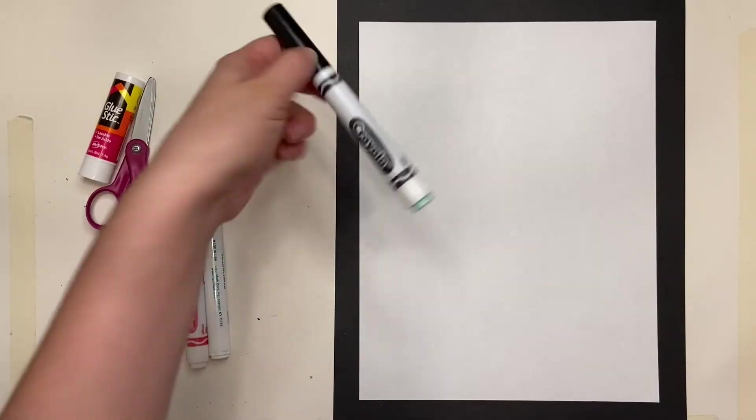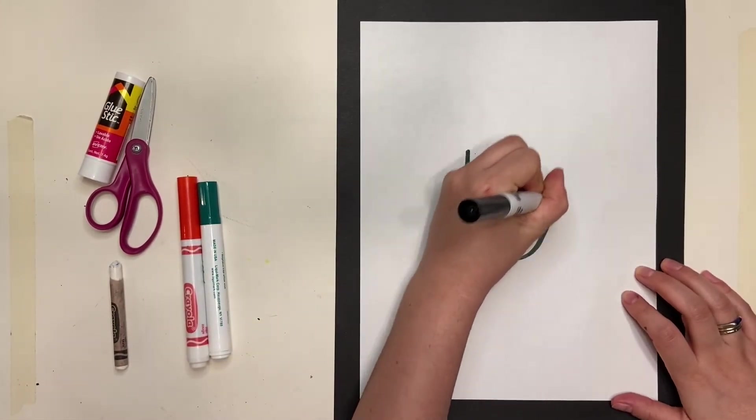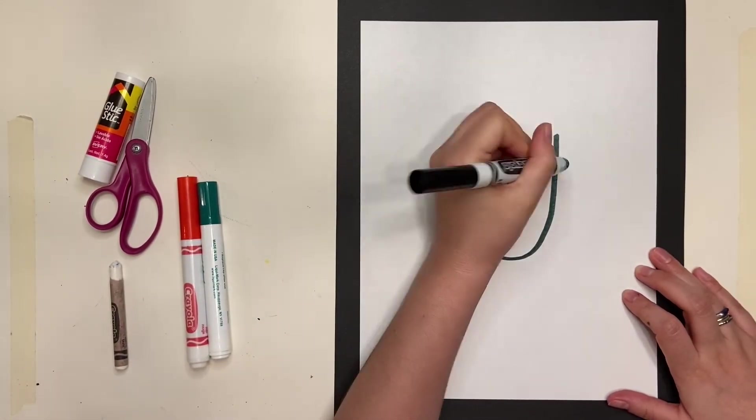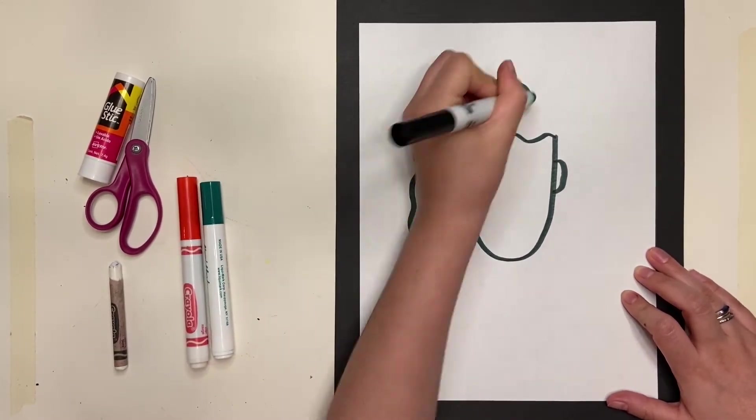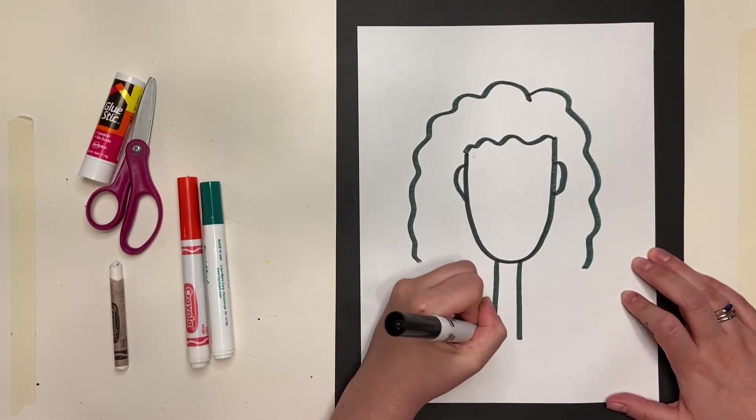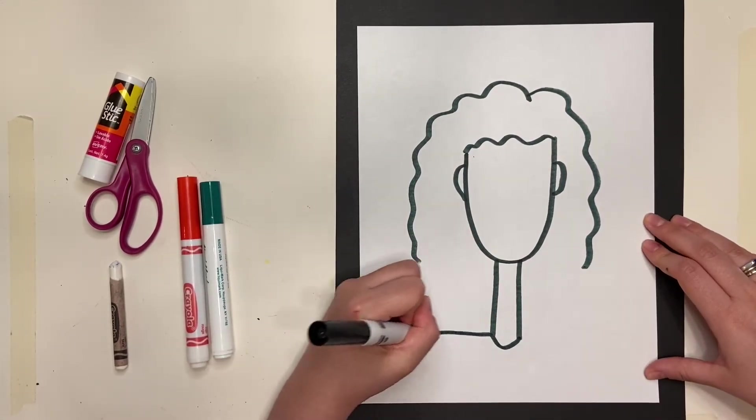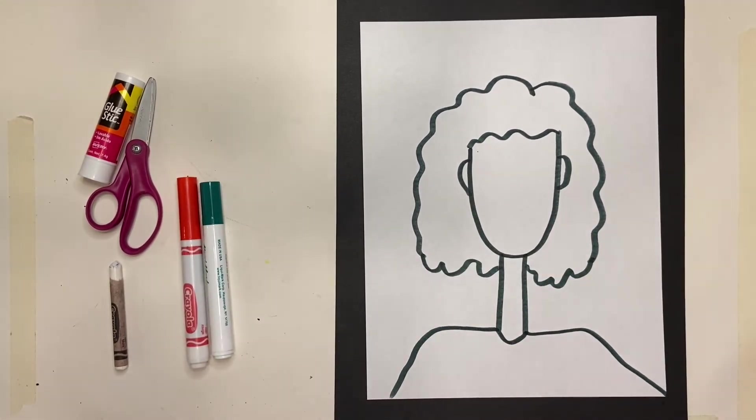If you don't, you can use markers. So I have a white piece of paper this time and I'm going to draw with a black marker a silhouette. Remember, I'm only focusing on the outline of my person. Again, we want a long, thin neck. I'm going to draw the shoulders instead of the whole body this time.